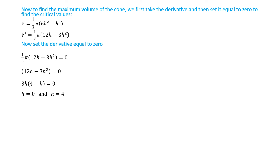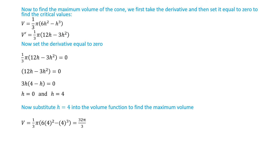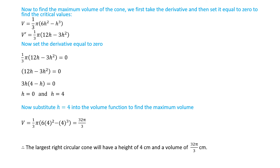Taking h = 4, we substitute it into the volume function: V = (1/3)π(6 · 4² − 4³) = (1/3)π(96 − 64) = 32π/3. Therefore, the largest right circular cone inscribed in the sphere has a height of 4 centimeters and a maximum volume of 32π/3 cubic centimeters.